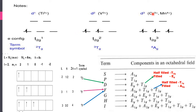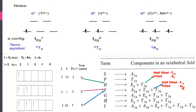For the d3 system — chromium 3+ or manganese 4+ — there are three electrons, and the t2g set is completely half-filled. The three electrons occupy ml = +2, +1, and 0, giving ML = 3, so L = 3, which is the F term. Resultant spin S = 3/2 and spin multiplicity = 4. Since the t2g set is completely half-filled, we get the A term, giving the ground term 4A2g.